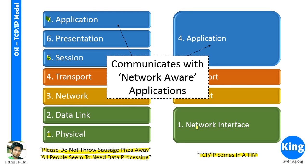Comparing the left and the right, layers 5, 6, and 7 of the OSI model are comparable to layer 4 (the application layer) of the TCP/IP model. The transport layer of OSI and the transport layer of TCP/IP have comparable functions. Similarly, the network layer maps to the internet layer. Layers 1 and 2 of the OSI model are comparable to layer 1 (network interface) of the TCP/IP model.